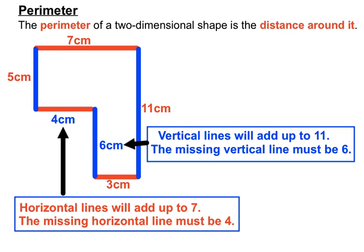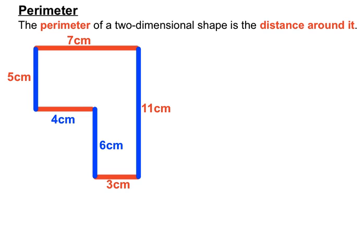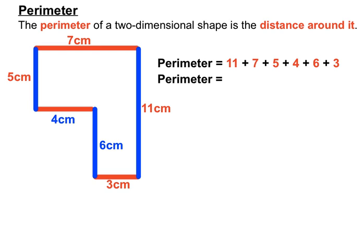We've used the comparison rule — comparing sides in the same direction — to work out the missing sides. Now we have all the sides we need, so going anti-clockwise: 11, plus 7, plus 5, plus 4, plus 6, plus 3 — giving a perimeter of 36 centimeters. It looked like a hard question at first, but comparing sides in the same direction made it manageable.